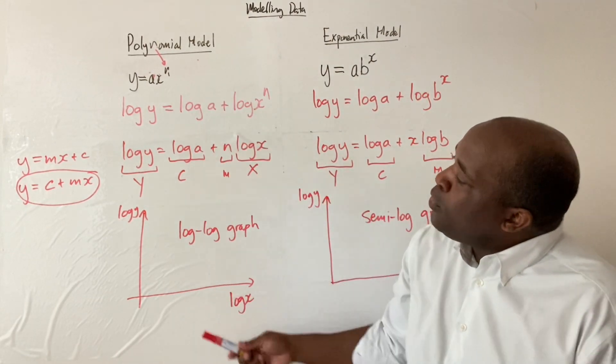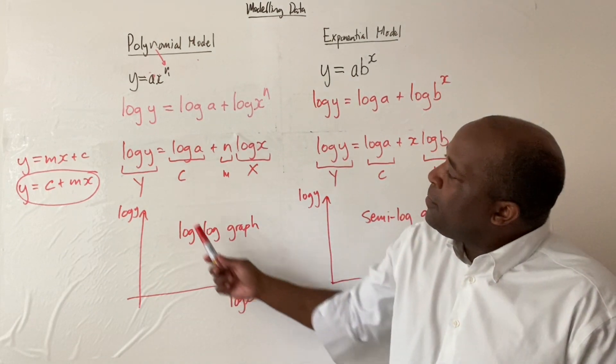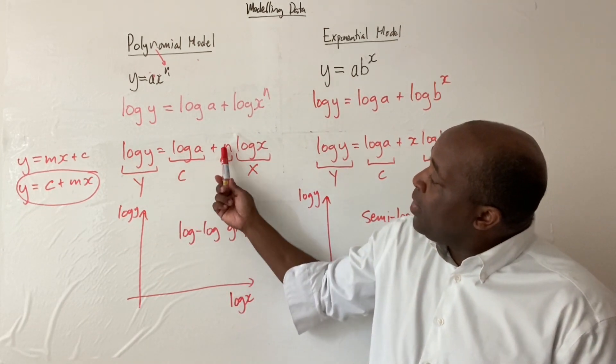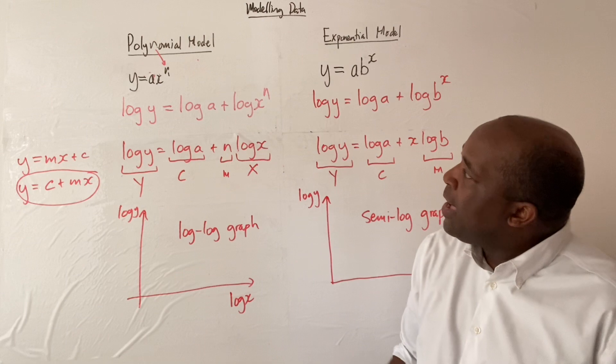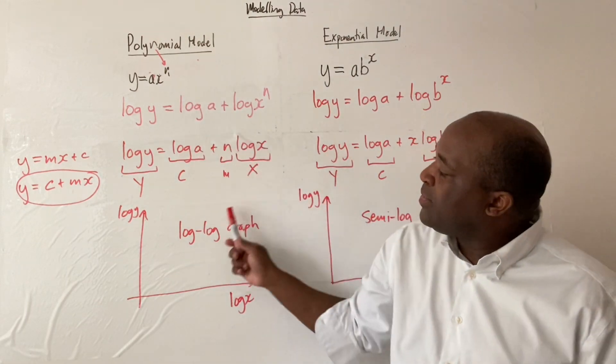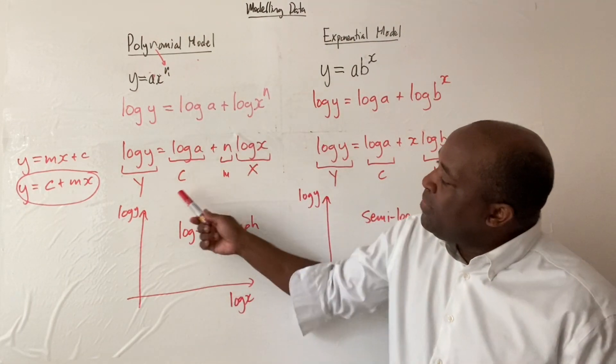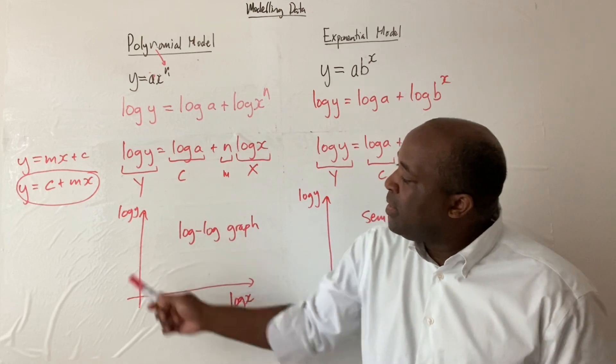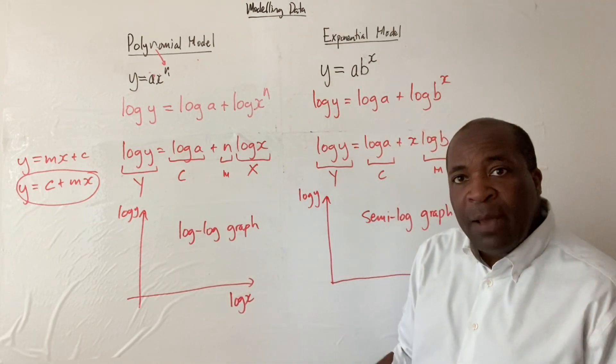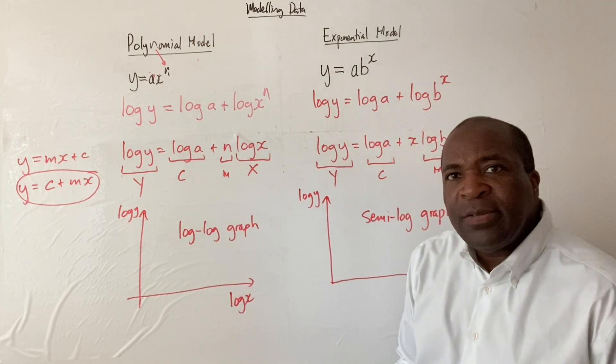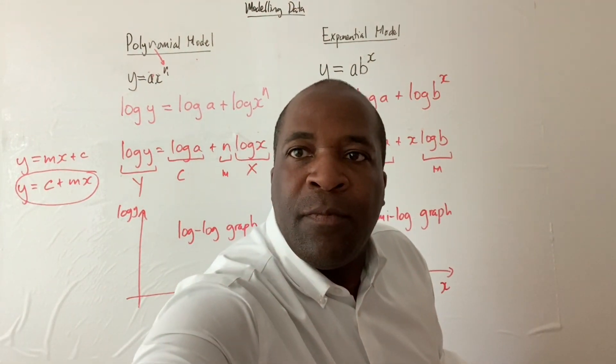Anytime you see a polynomial model, it's log-log, and the gradient is n. The gradient n is the gradient of the line, and the y-intercept is log a. We'll work through examples like this in the coming videos.